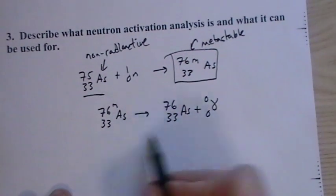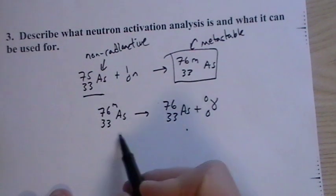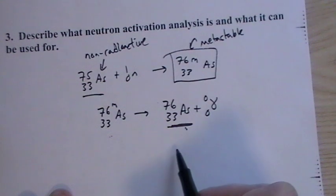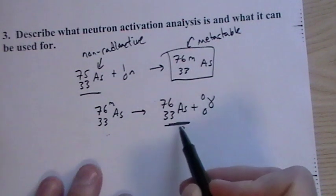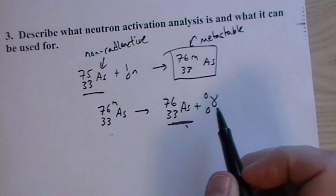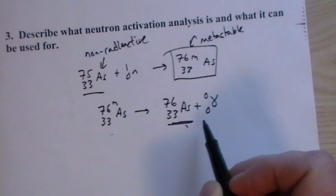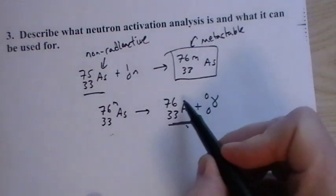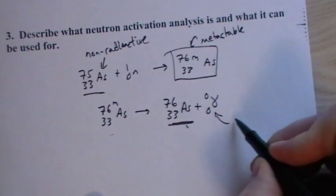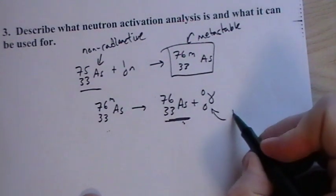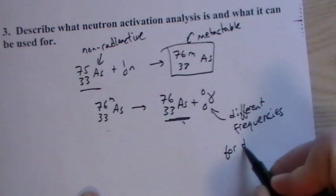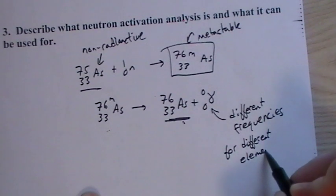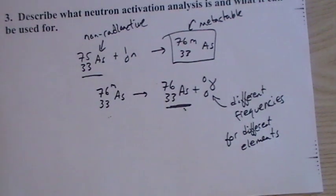Then that metastable element is going to decay into a stable form of the element and give off a gamma particle. And this one, different frequencies for different elements. So a lot of elements will react to this neutron activation analysis and will give off different forms of gamma photons.